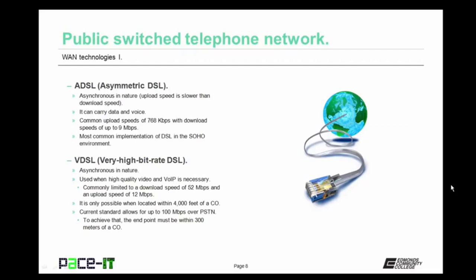ADSL can carry data and voice. Common upload speeds for ADSL are 768 kilobits per second, with download speeds of up to 9 megabits per second. It is the most common implementation of DSL in the small office, home office environment.